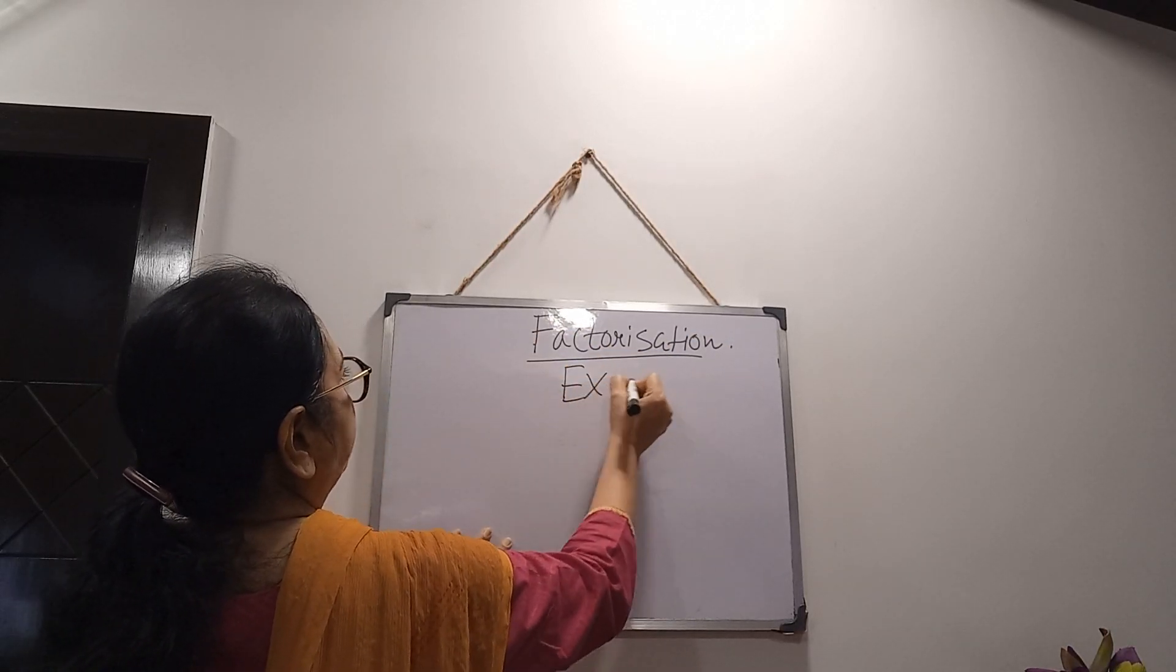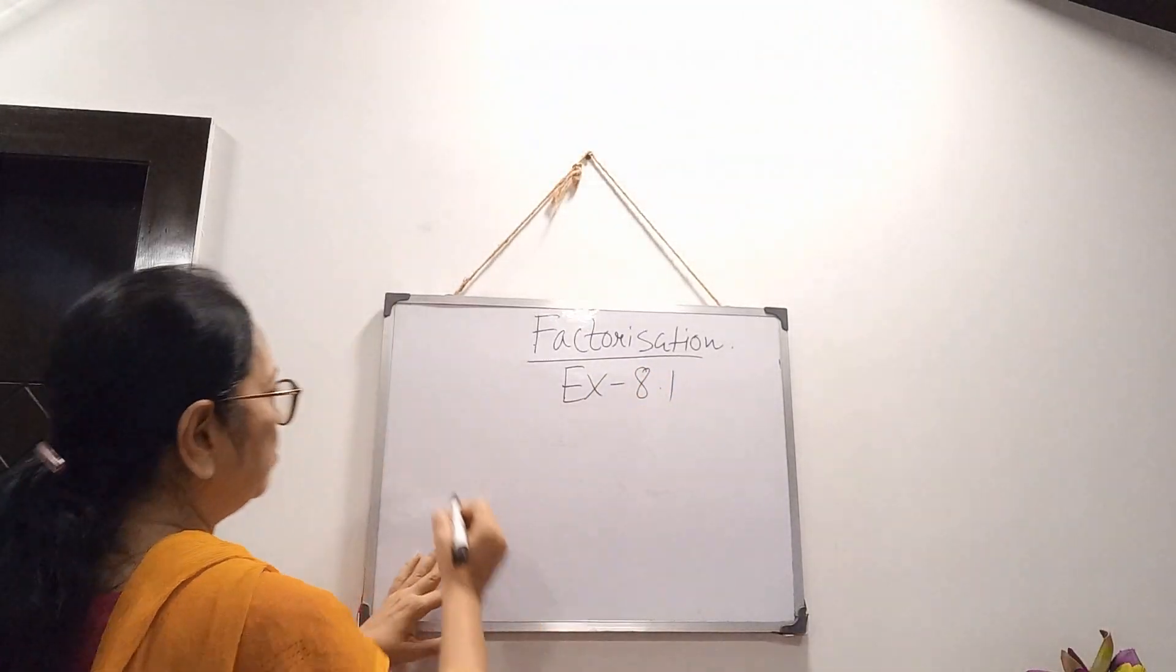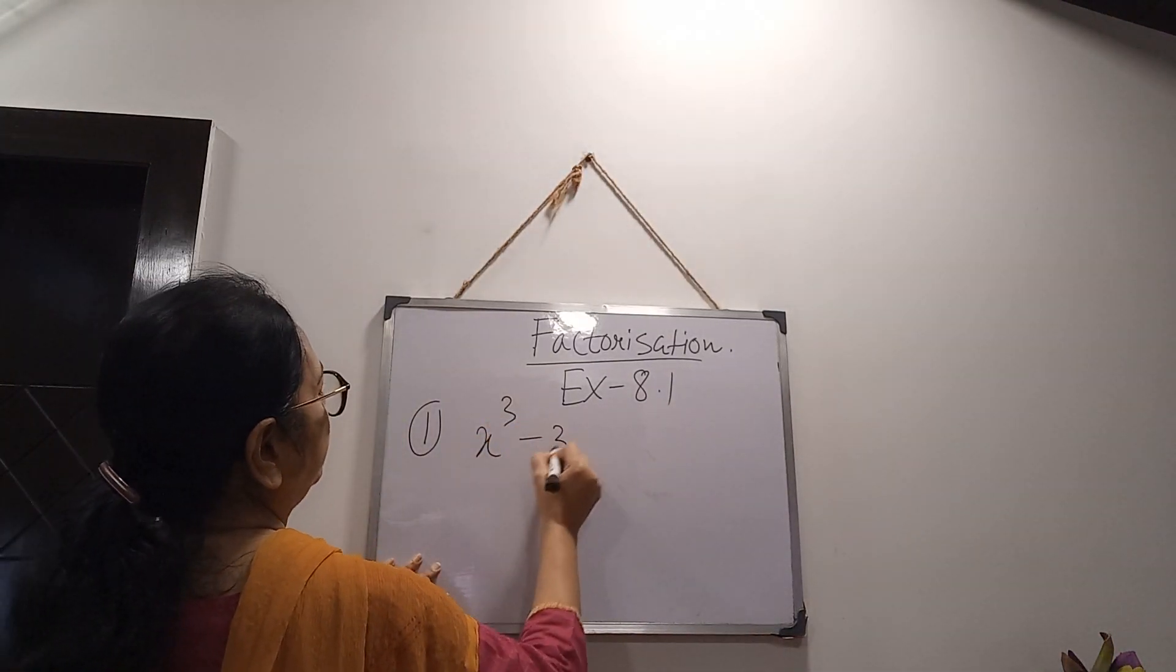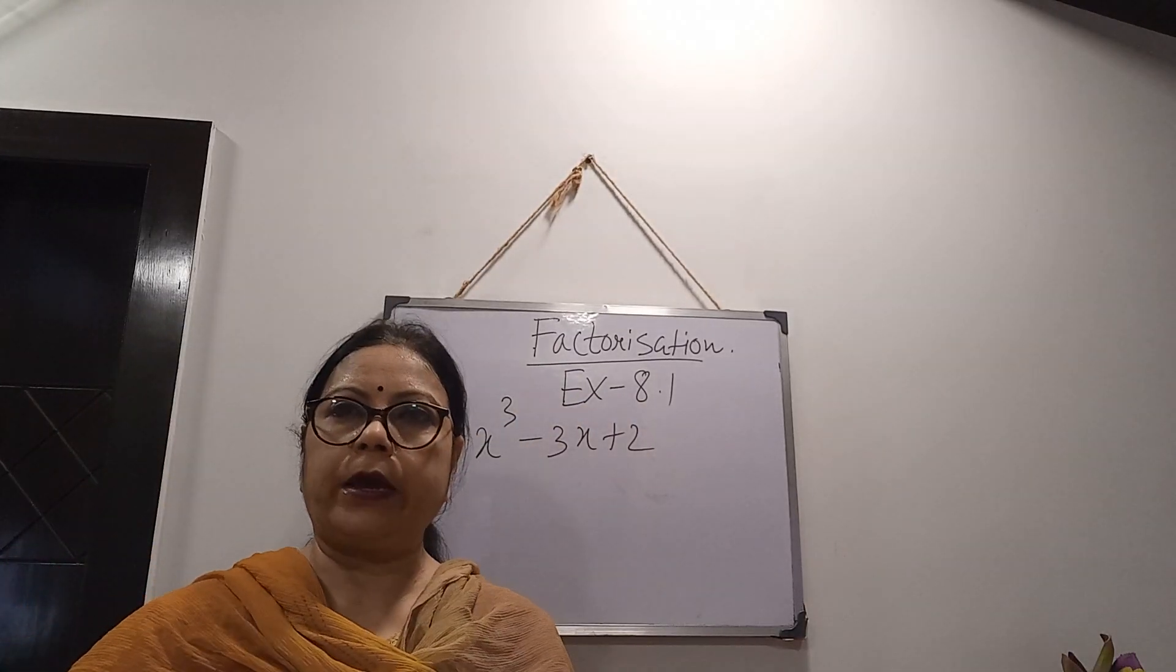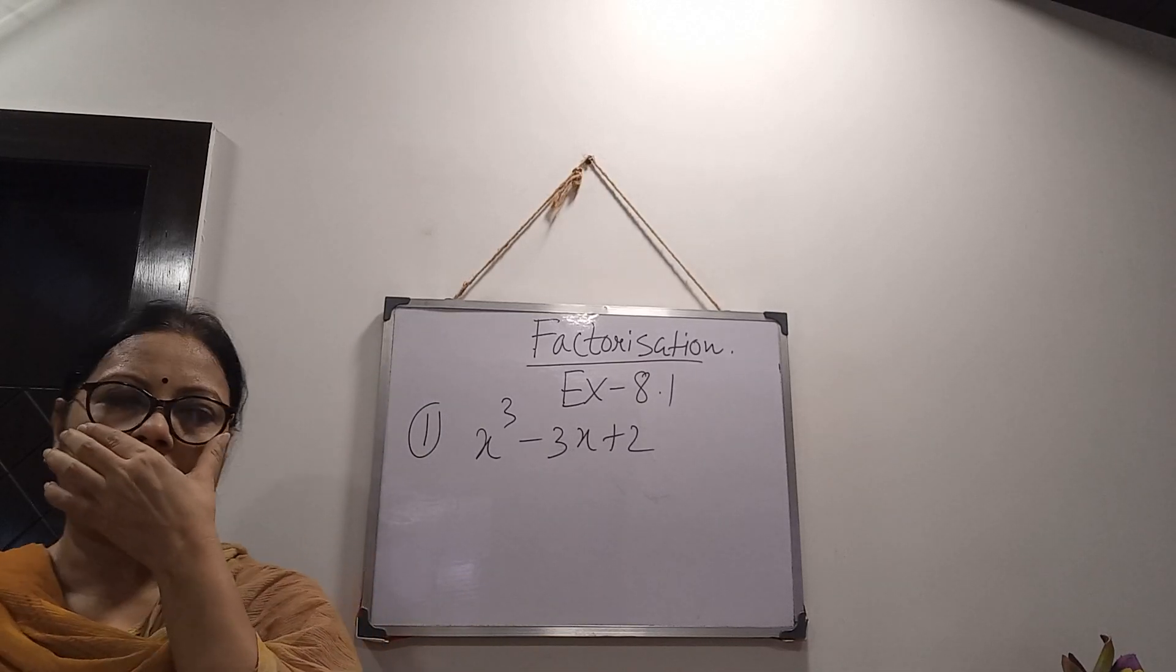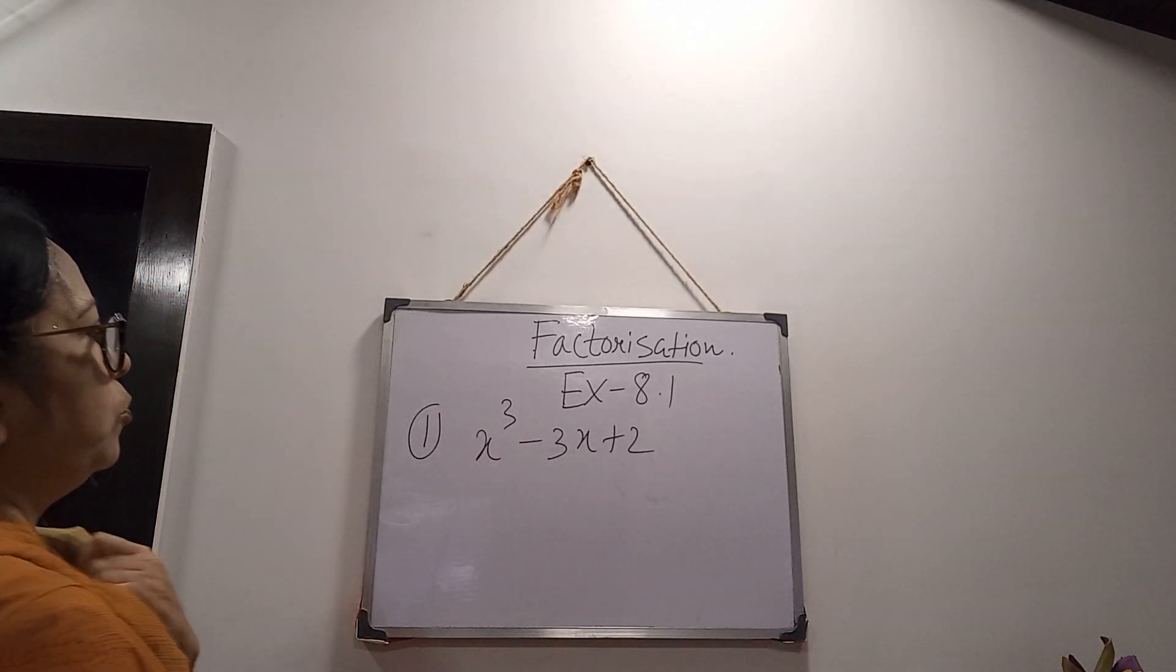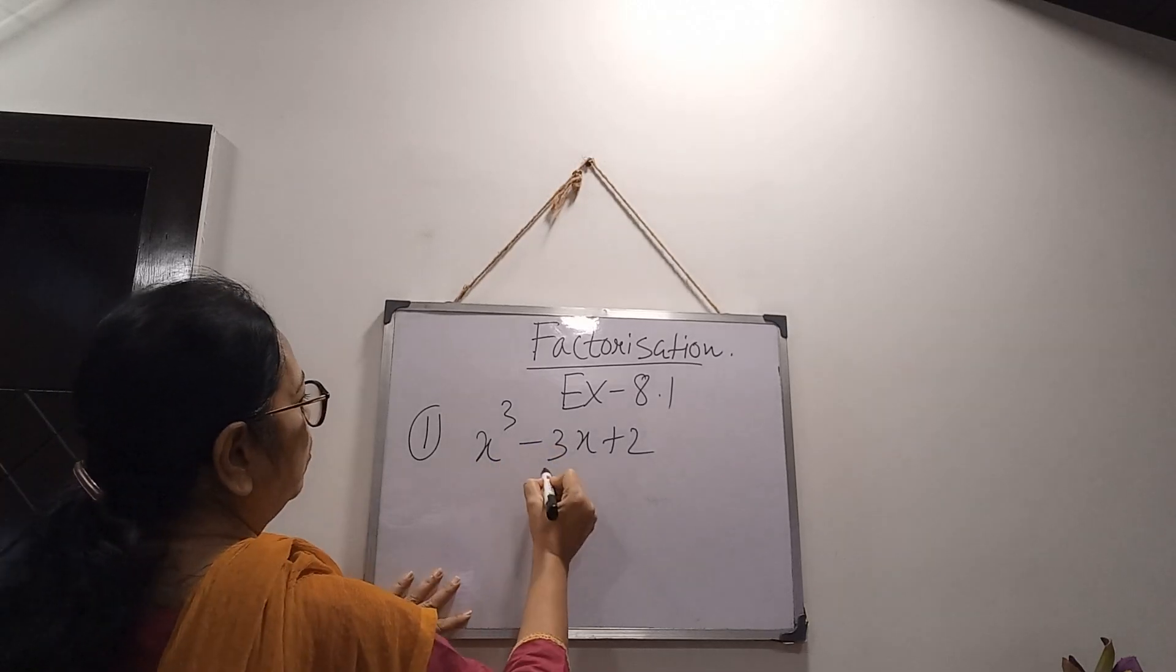First, I will explain exercise 8.1. First number is number 1: x³ - 3x + 2. This one we can do by zero vanishing method or zero factor method or by using cubic formula. Here, I am showing you how to find out factors by using cubic formula. One trick is there.